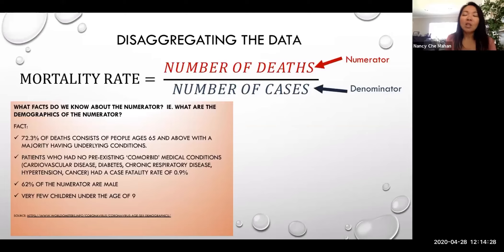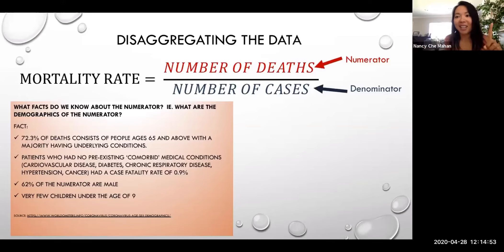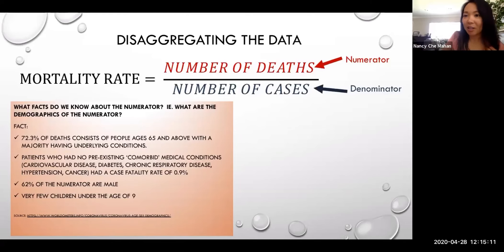People or patients who have had none of these comorbid diseases have had a fatality rate of 0.9% — so about 1% of those who have unfortunately died did not have any comorbid medical conditions. So 1% means there are people without other conditions, but again, it's 1%. I know the news and social media are really highlighting stories of that 1%, but they need to realize it is 1%. Would anyone like to talk about the 99%? And 62% of the numerator are male. Very few children under the age of nine.